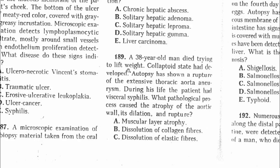Question 189: An old man who died trying to lift weights developed a collaptic state. Autopsy showed a rupture of an extensive thoracic aortic aneurysm; during his life the patient had visceral syphilis. The pathological process causing atrophy of the aortic wall, dilation, and rupture is the dissolution of elastic fibers — since the aortic wall is made mainly of elastic fibers. The answer is C.